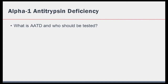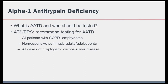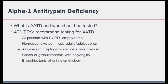So who should be tested? The ATS ERS recommend testing for alpha-1 antitrypsin deficiency in the following: all patients with COPD or emphysema; non-responsive asthmatic adults or adolescents; all cases of cryptogenic cirrhosis or liver disease; cases of granulomatosis with polyangiitis; bronchiectasis of unknown etiology; panniculitis; or any first-degree relative of a patient with alpha-1 antitrypsin deficiency.